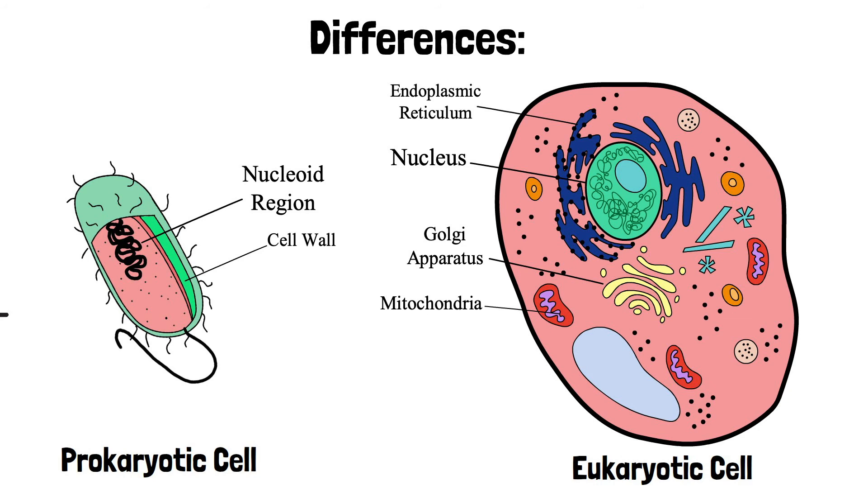Prokaryotes reproduce asexually, resulting in the offspring being an exact clone to the parent, while most eukaryotes reproduce sexually. These are a few of the major differences between the eukaryotes and prokaryotes.